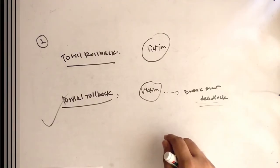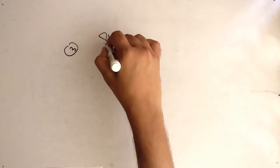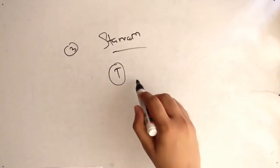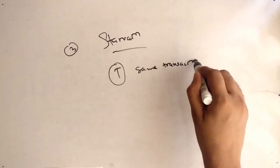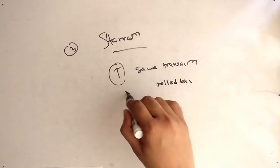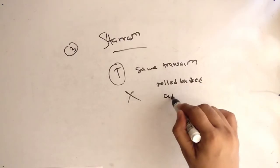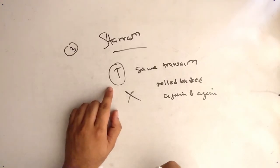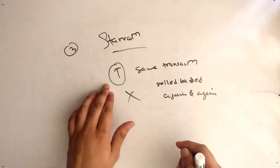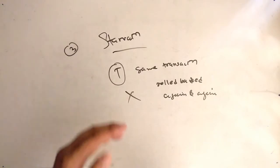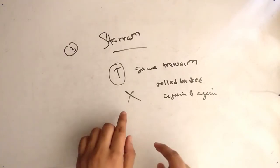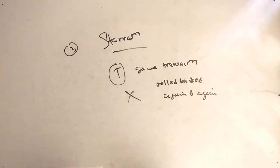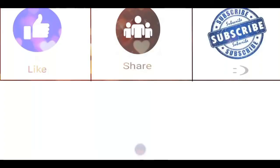The third point is starvation. When rolling back transactions, make sure the same transaction is not rolled back again and again. If the same transaction is repeatedly selected as the victim and rolled back, it will never get a chance to complete — meaning it will starve. We have to avoid this. The same transaction should not be rolled back again and again; this must be kept in mind when dealing with deadlock recovery.